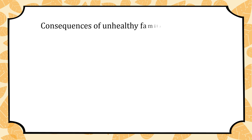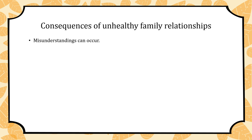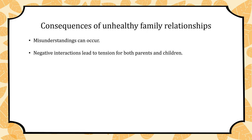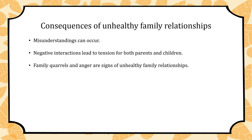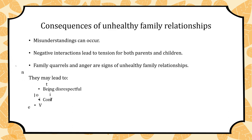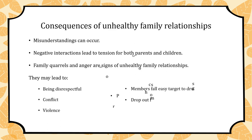What happens if we fail to build healthy family relationships? In all families, misunderstandings occur. Negative interactions within families can be a source of tension for both parents and children. Family quarrels and anger are the most immediate signs of unhealthy family relationships. Often, these lead to more serious consequences such as being disrespectful, conflict, violence, members falling easy target to drugs, dropping out from school, and problems with peers and at school.